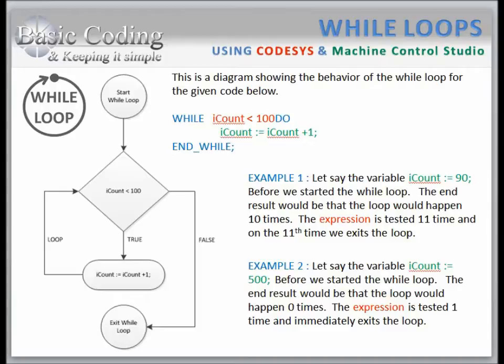This is a diagram showing the behavior of the while loop for the given code below. Before we talk about the diagram, we should talk about the code structure of the while loop. The while loop has three keywords: the first is WHILE, the second is DO, and the third is END_WHILE.